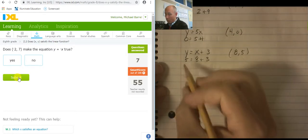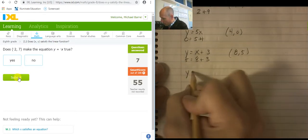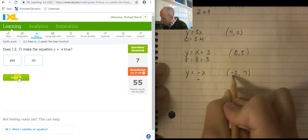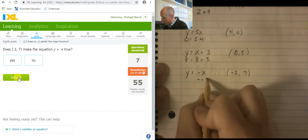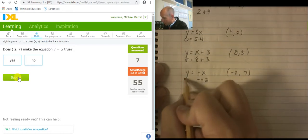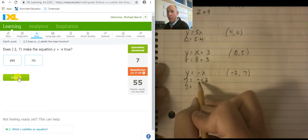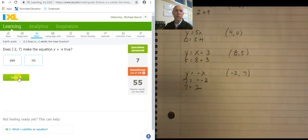Y equals negative x. And what am I plugging in? Negative 2 comma 7. So negative x, negative, negative 2. 7 equals negative, negative 2. So 7 equals 2 negatives in a row become a positive. So 7 equals 2. No.